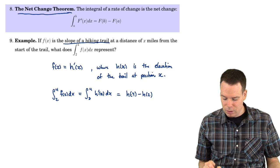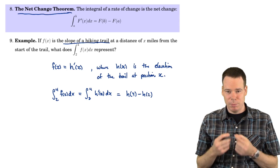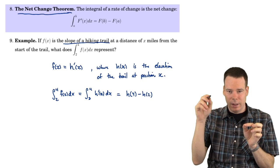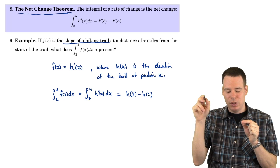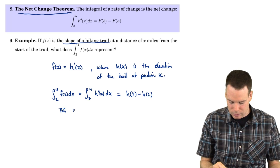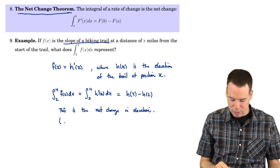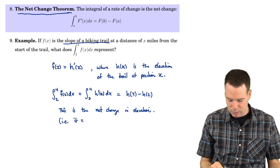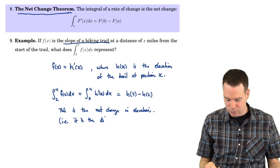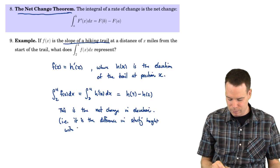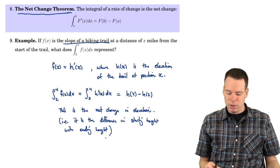By the fundamental theorem, that equals h(4) minus h(2) — the elevation at position 4 minus the elevation at position 2. Starting at position x = 2 and moving along the trail to x = 4, h(4) minus h(2) is just the net change in elevation. So integrating the slope of the trail gives you the net change in elevation, i.e., the difference between starting height and ending height along the trail.